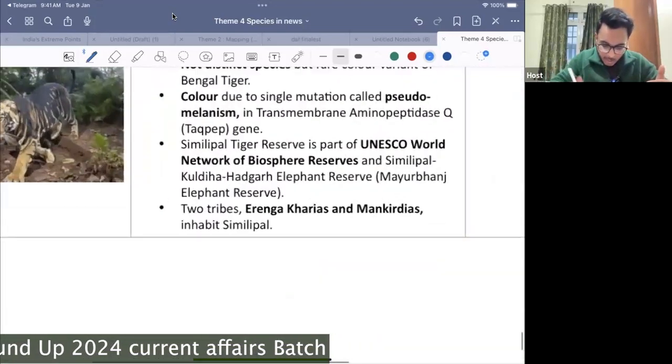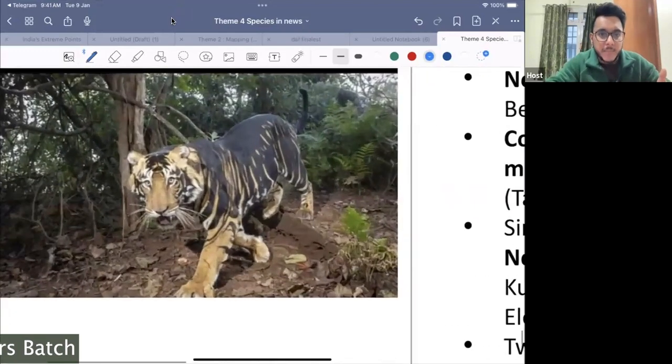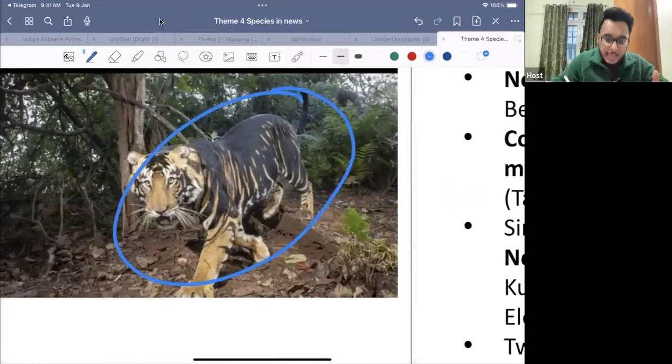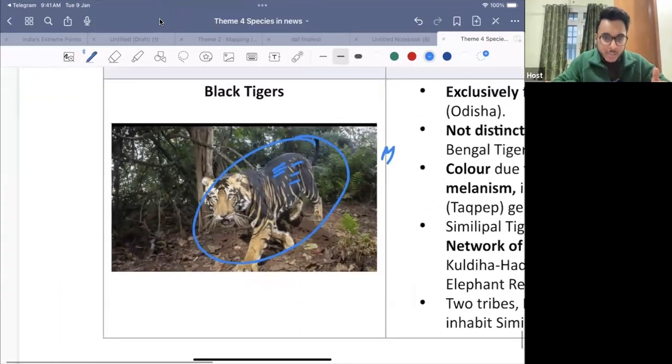So here you can see, this is the melanistic tiger. Now in this melanistic tiger, you see that there is exceptional dark coat. Why exceptional dark coat? Because of the excess production of melanin. Excess production of melanin.